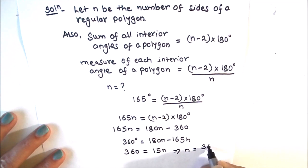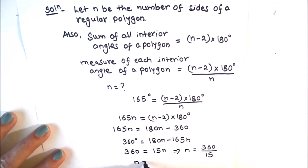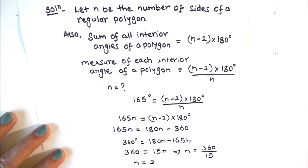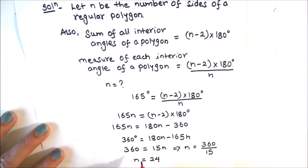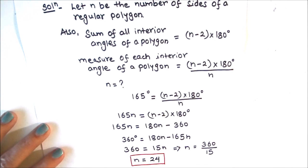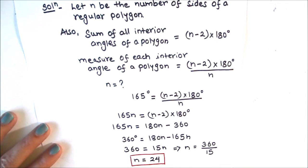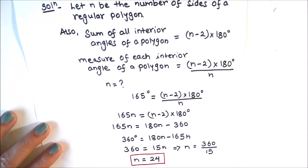So n = 360 / 15. Dividing: 360 / 15 = 24. Therefore, the number of sides of the regular polygon is 24. This is the answer — the regular polygon has 24 sides if each of its interior angles is 165 degrees.